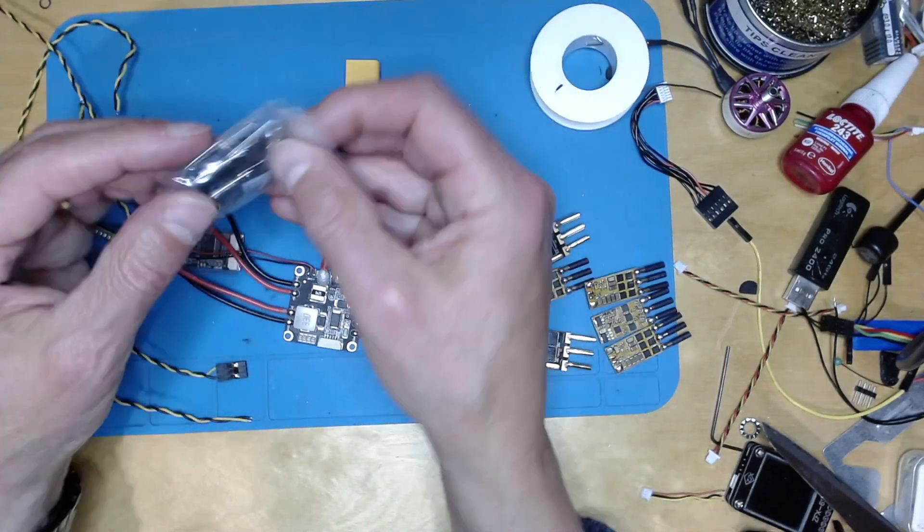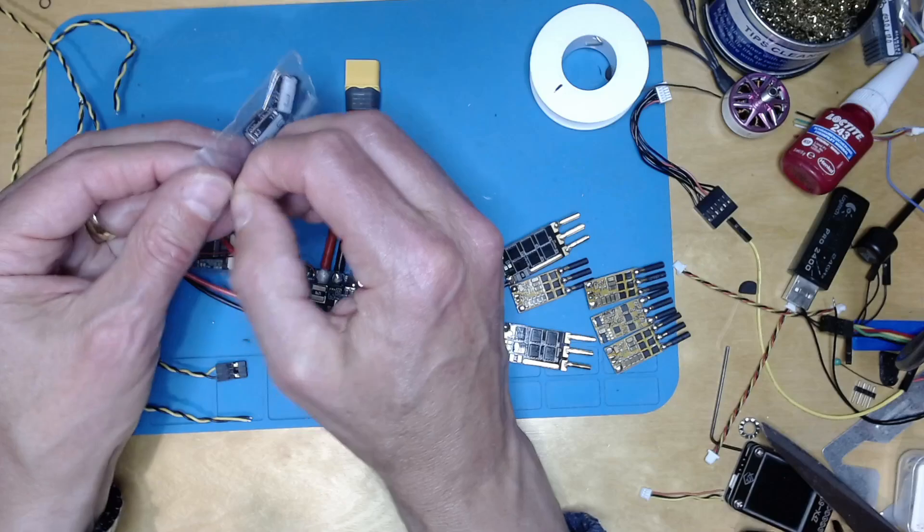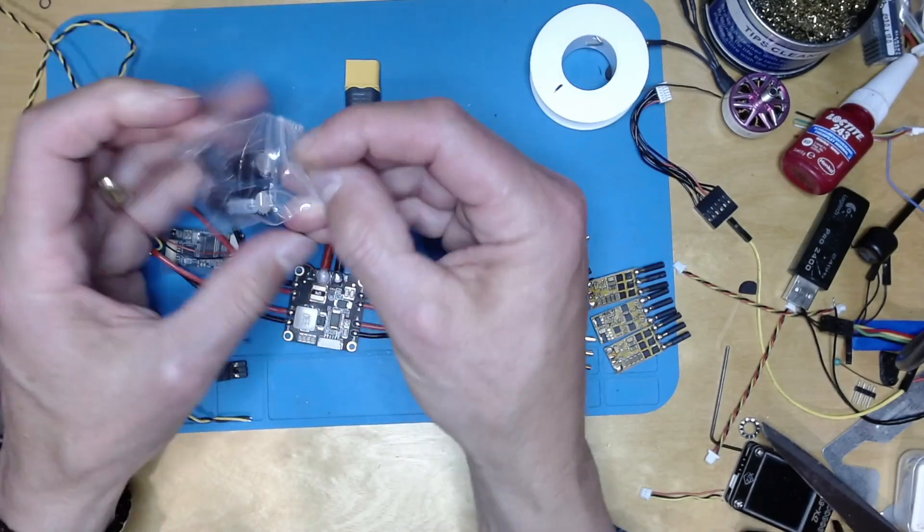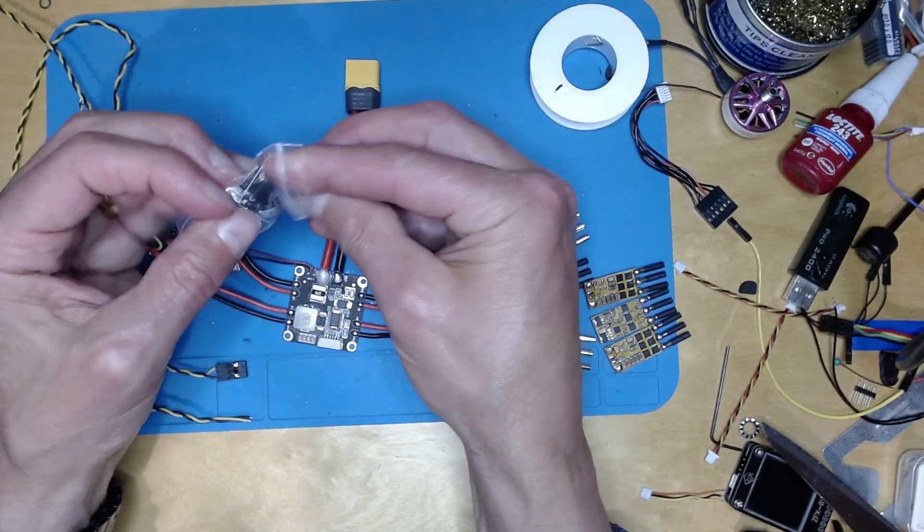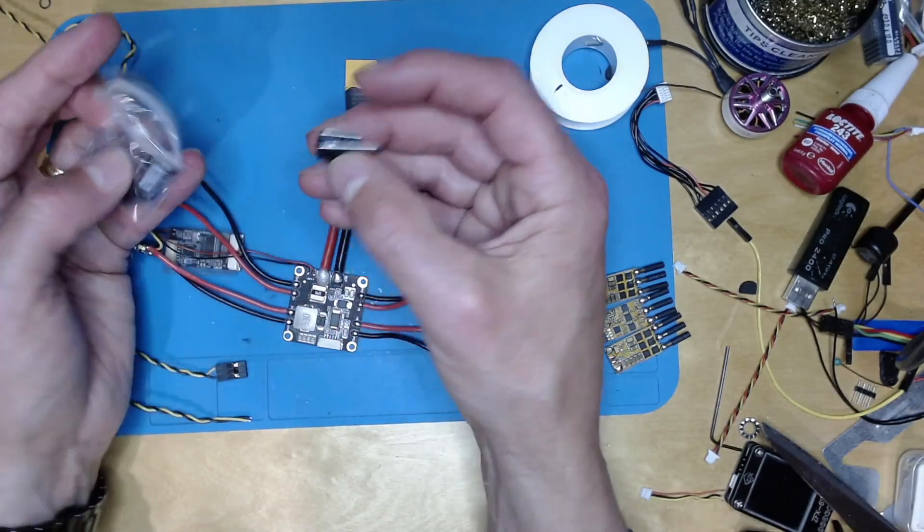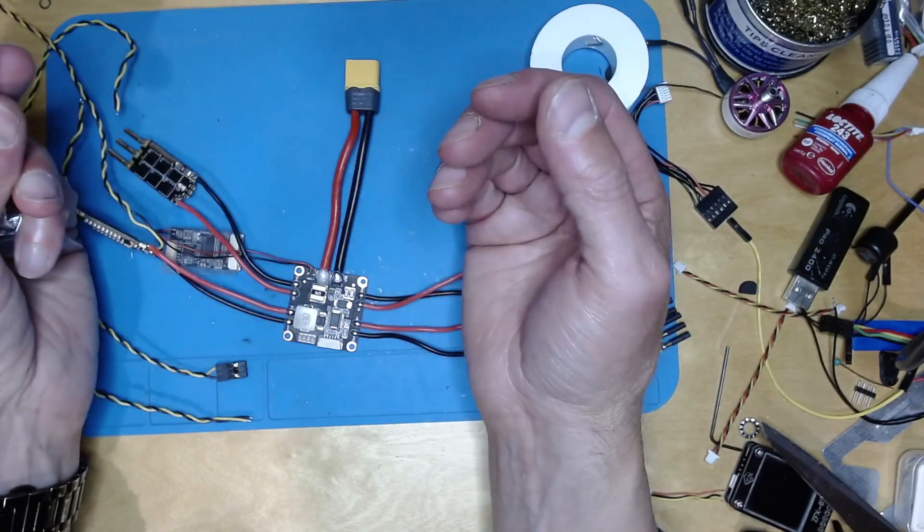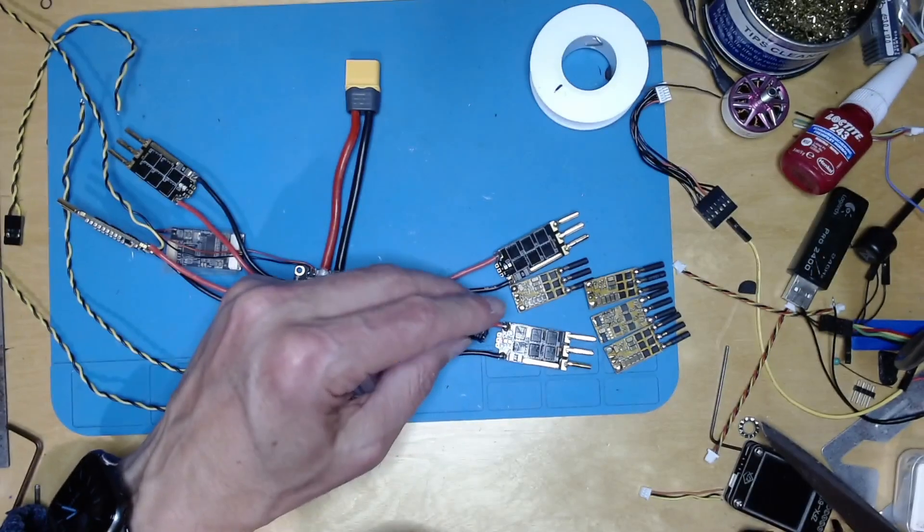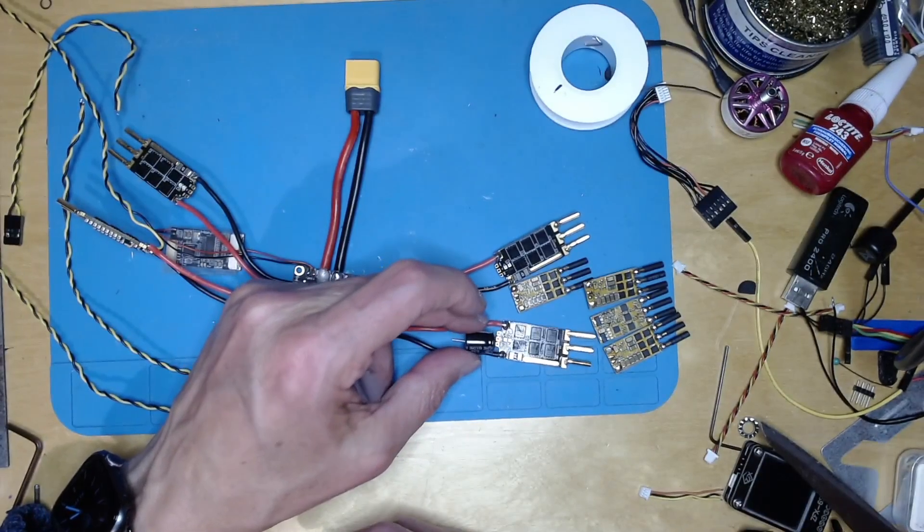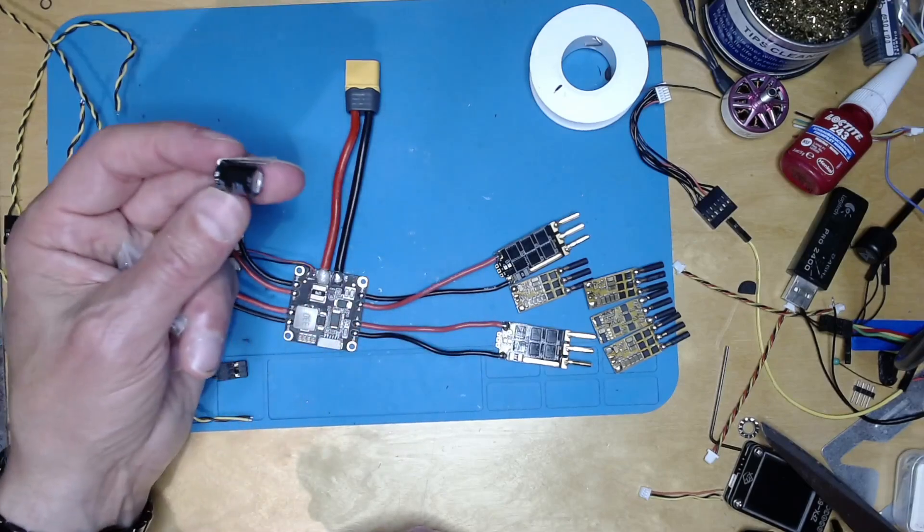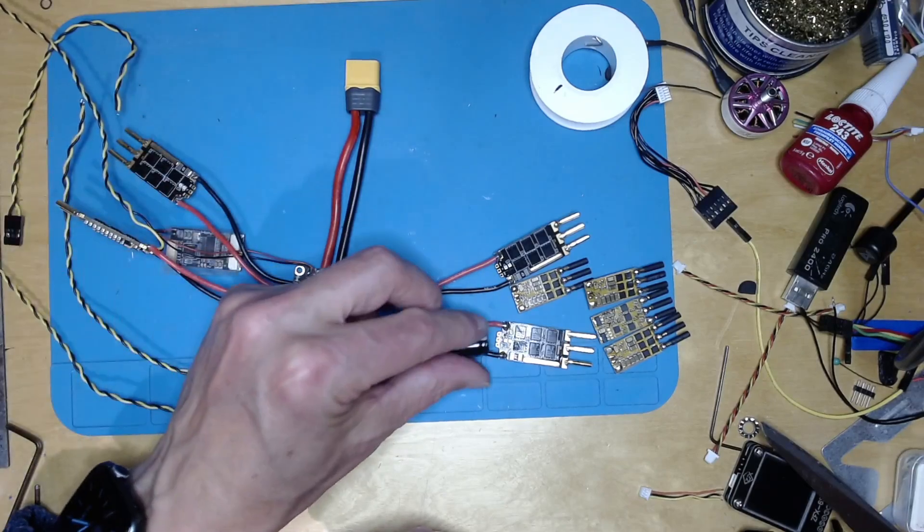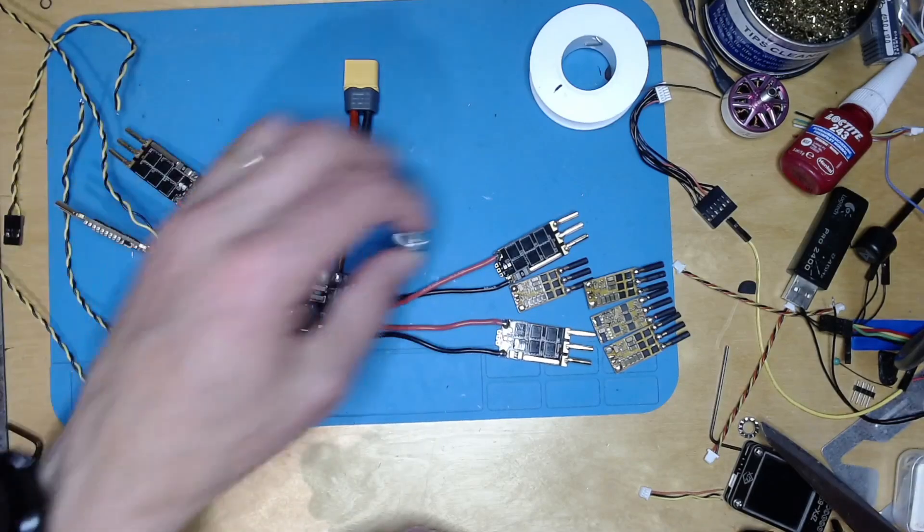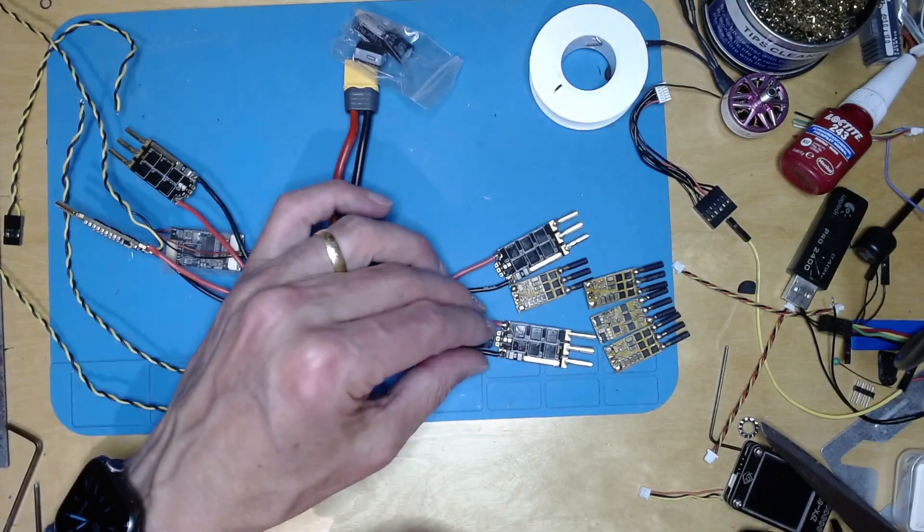So the only remaining thing to do is figure out what I'm going to do about the capacitors. So I could put a capacitor on each ESC - quite big though. My options are put one on each ESC.